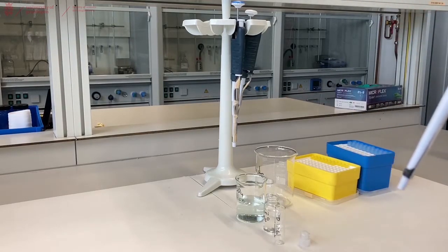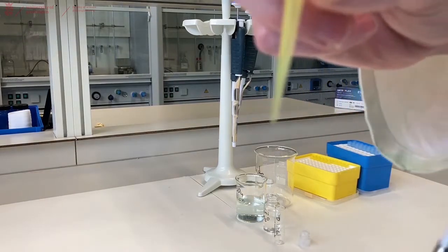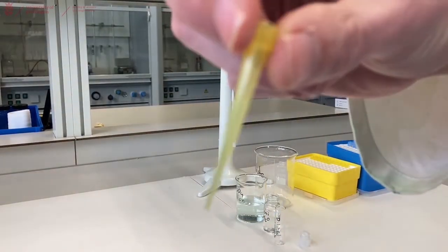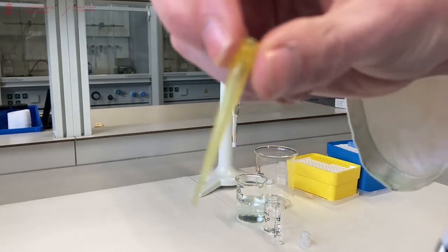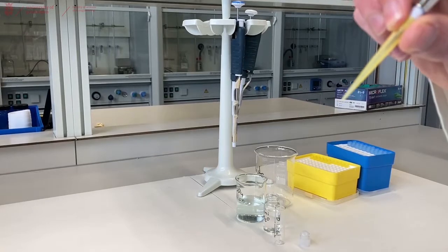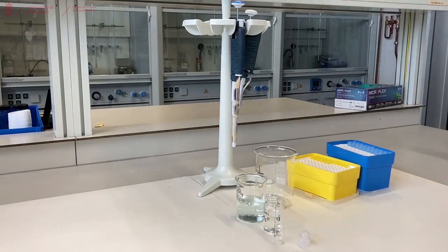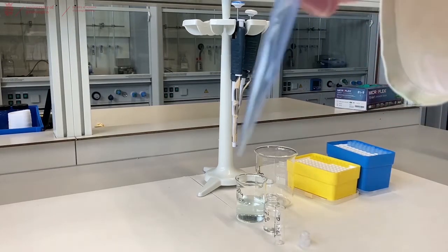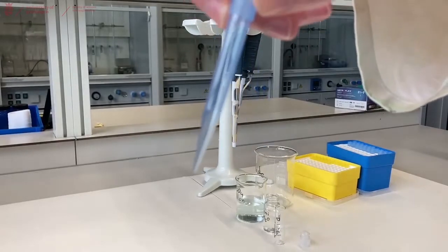Pipette tips come in different colors. The yellow pipette tips for this specific pipette are calibrated between 2 and 200 microliters, and you can attach them to the bottom of your pipette by putting the pipette into the box. The blue ones are calibrated from 200 to 1000 microliters and fit on the larger pipettes.